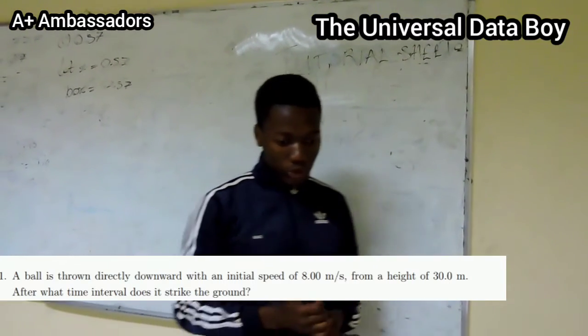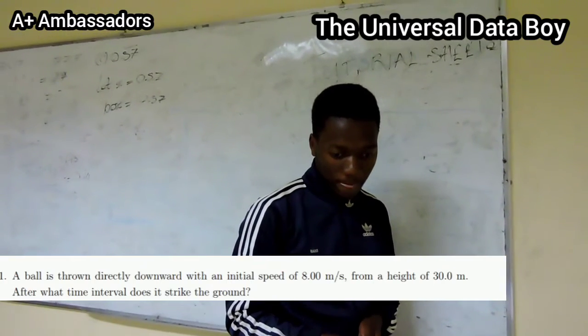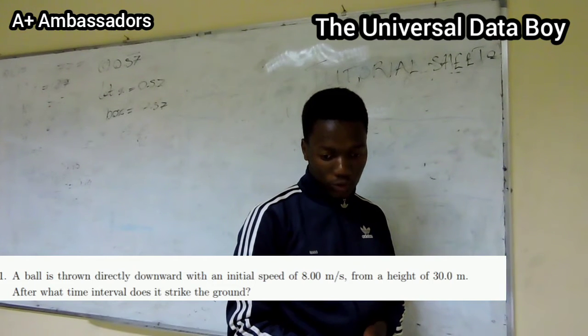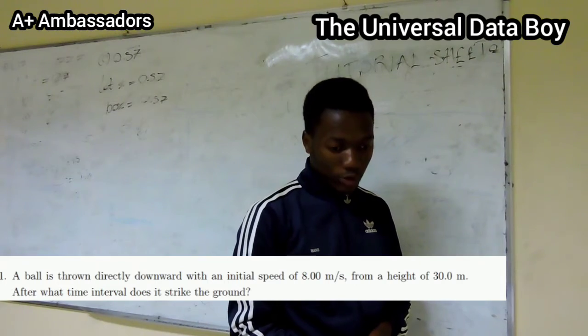Question 1 says: A ball is thrown directly downward with an initial speed of 8.00 meters per second from a height of 30.0 meters. After what time interval does it strike the ground?